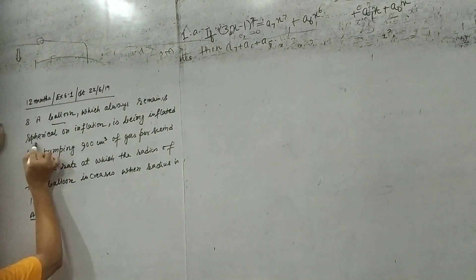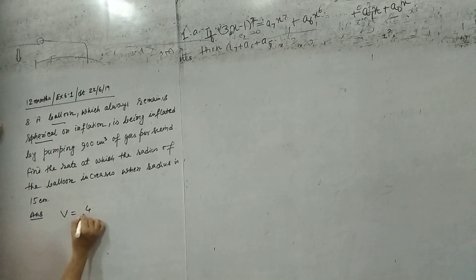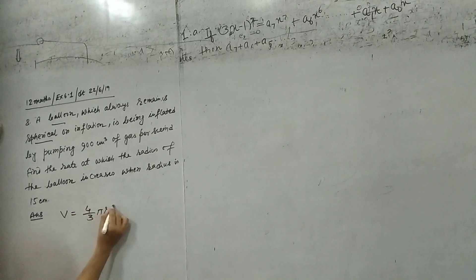So we know that this is a spherical balloon. That means V equals 4 by 3 pi R cubed.